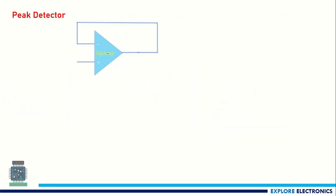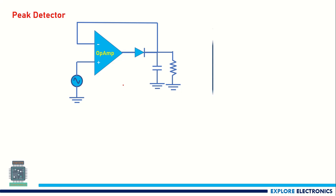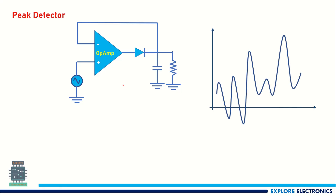To reduce this error we need to use a precision diode, which means using a precision rectifier circuit. The precision rectifier circuit uses a buffer or voltage follower with a diode at the output terminal. We apply the same time-varying signal as input, and with a capacitor at the output, the capacitor charges so that the voltage across the load can be measured as the exact peak value.